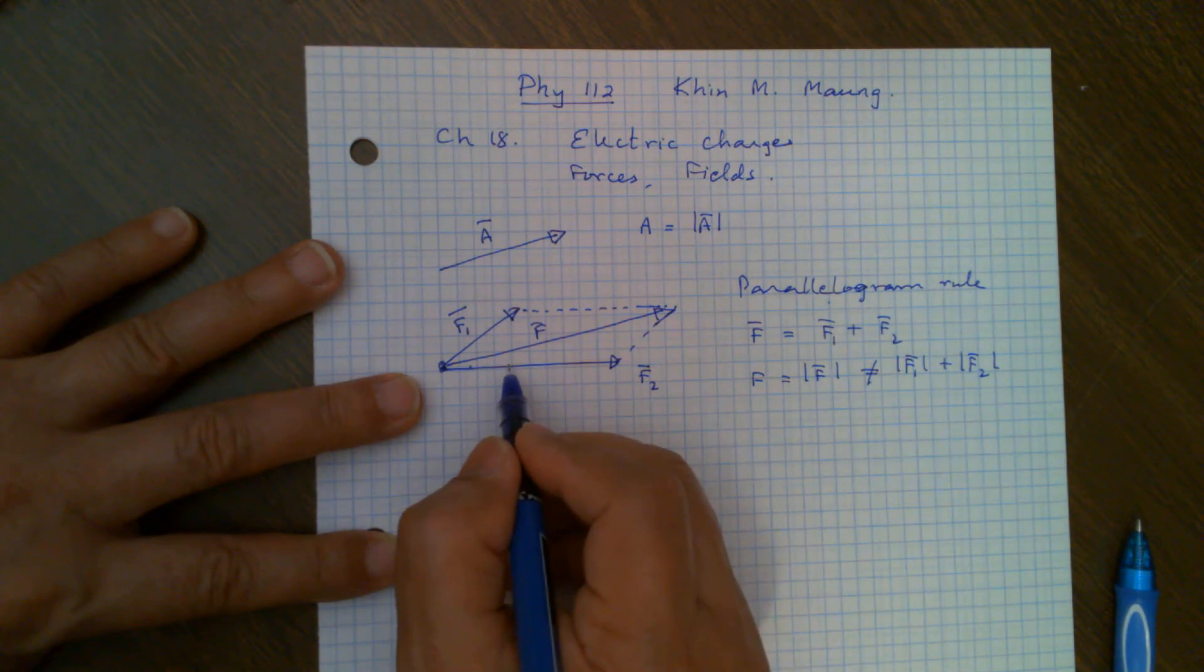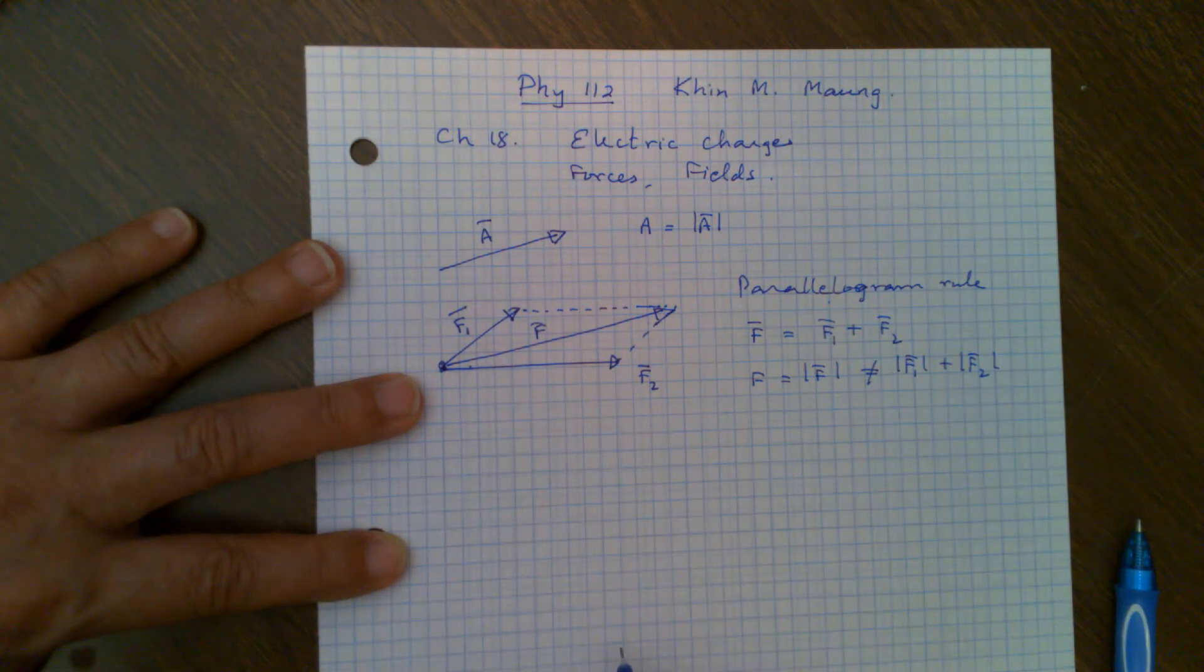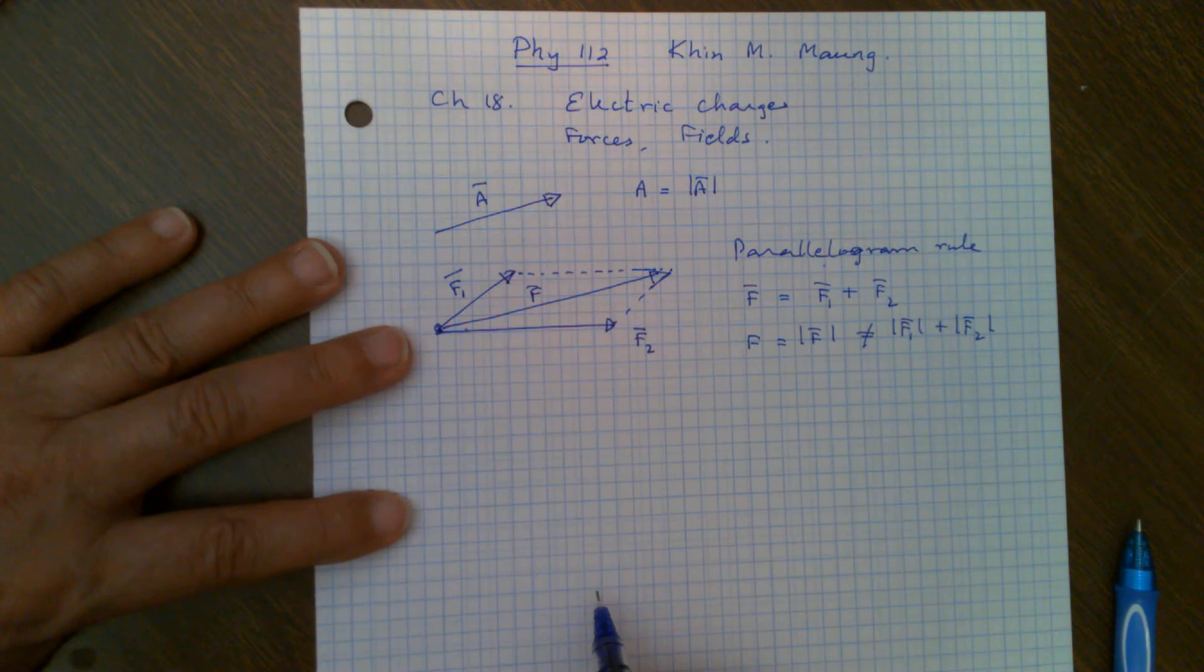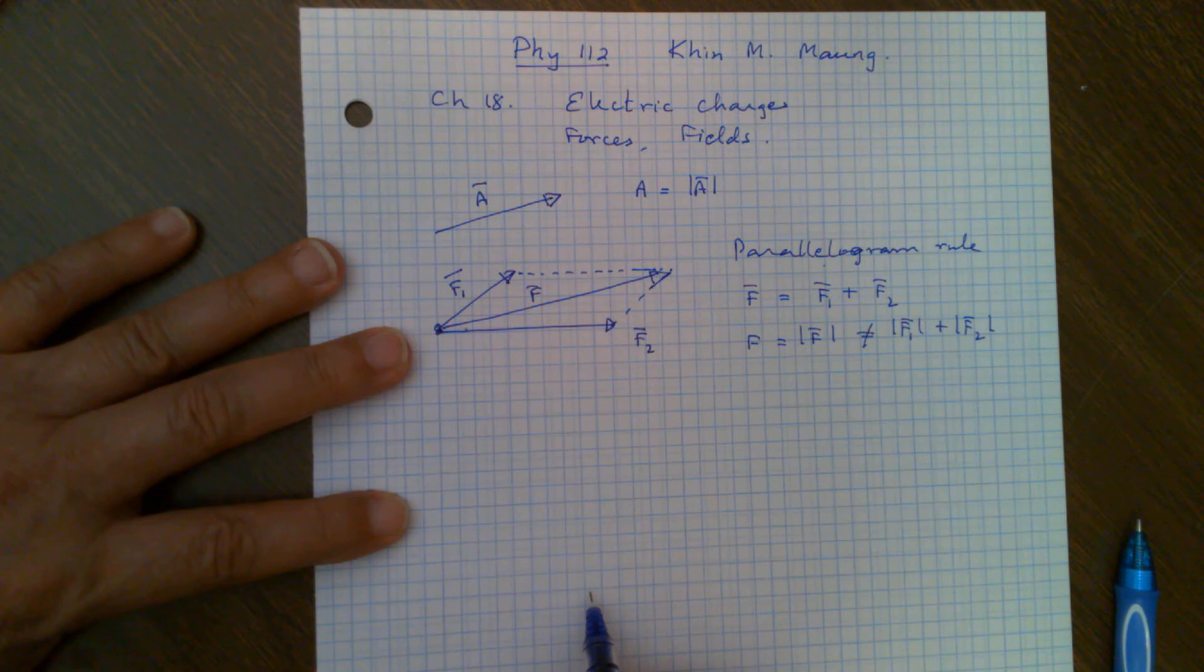And then we can also find in what direction it will go. We can find this angle. But we are not going to do that way. It's a long way to do this simple little problem. So what we are going to do is we will learn how to add vectors in a different way. In order to do that, first, it looks like it's complicated, but actually, once you know it, it's very simple. It is called vector decomposition.